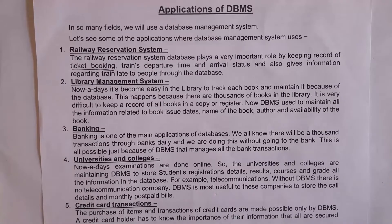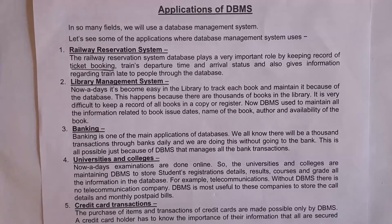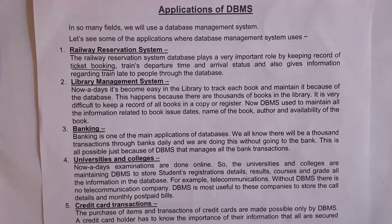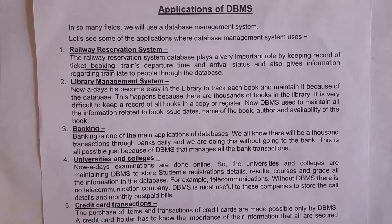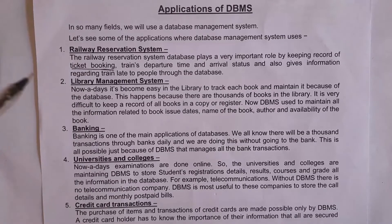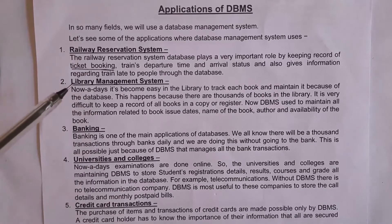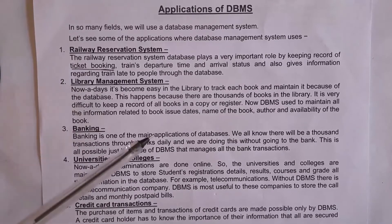Not only ticket booking information, but the railway reservation system database also stores various information regarding trains — like what trains are available, at what time a train will arrive, at what time it will start, and also information regarding late trains. All this information is stored in the railway database. The second application is the library management system.